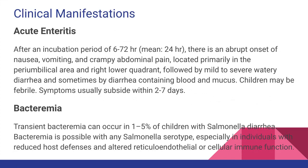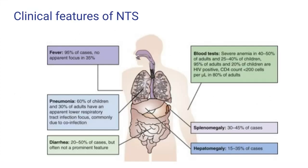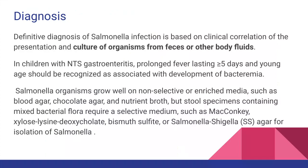Another manifestation is bacteremia: transient bacteremia can occur in 1 to 5 percent of children with Salmonella diarrhea and can occur with any Salmonella serotype, but especially in individuals with reduced host defenses such as immunodeficiencies or altered reticuloendothelial or cellular immune function. Systemic symptoms include fever, pneumonia, diarrhea, and hepatosplenomegaly. Diagnosis is made by culture of organisms from feces or other body fluids.